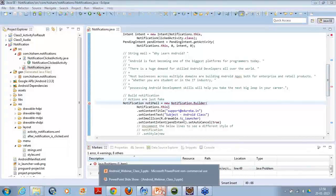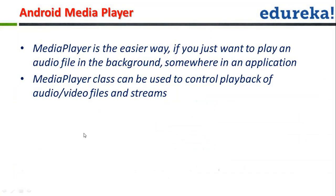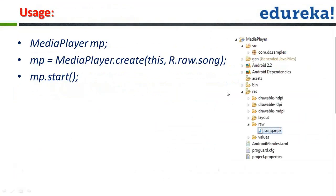Coming back to our slide - the MediaPlayer class can be used to control playback of audio or video files. The use case is: if I have developed a messaging application and you are going through messages, when you start the message activity you might also want to play a song in the background. That can be done with the help of this. You can start a song with the MediaPlayer class, and you can keep the song within your project inside a raw folder, which can be used to put the song inside it.